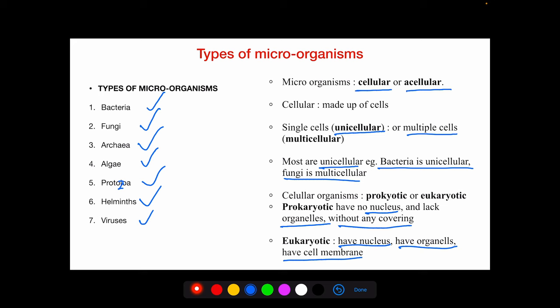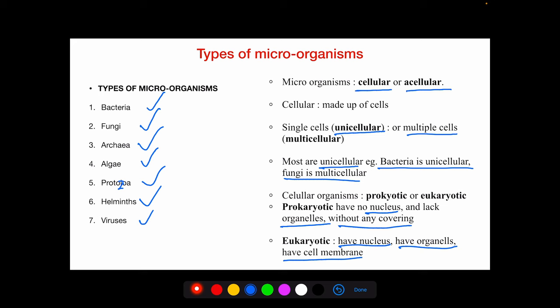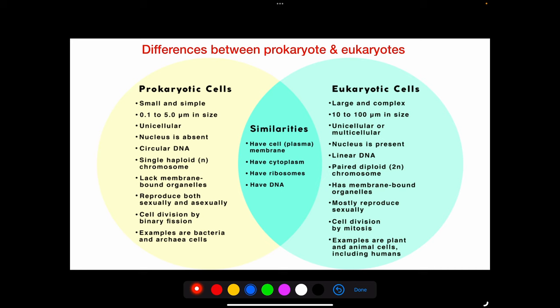Examples of prokaryotic cells include bacteria — which may be spherical (cocci) or rod-shaped (bacilli) — and actinomycetes, which share characteristics with bacteria and fungi. Eukaryotic cells include all animals, plants, fungi, and many unicellular organisms such as fungi, algae, and protozoa, which may be free-living or parasitic. Helminths may also be free-living or parasitic and include flukes (trematodes), tapeworms (cestodes), and roundworms (nematodes).